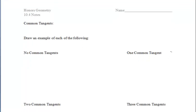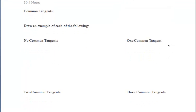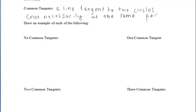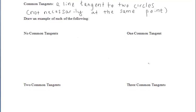Let's move on to the second page. Now we're going to talk about common tangents. A common tangent is a line that is tangent to two circles, but it's not necessarily going to pass through the same point. So I want you to take a moment to think about the following and try to draw out a picture for each one of those.